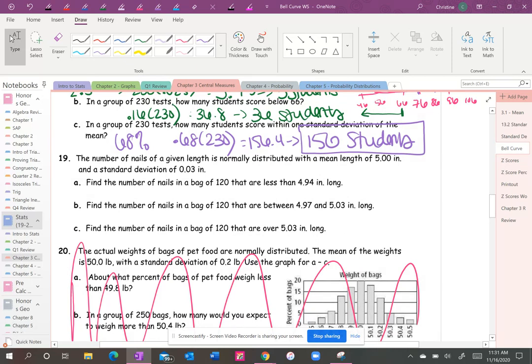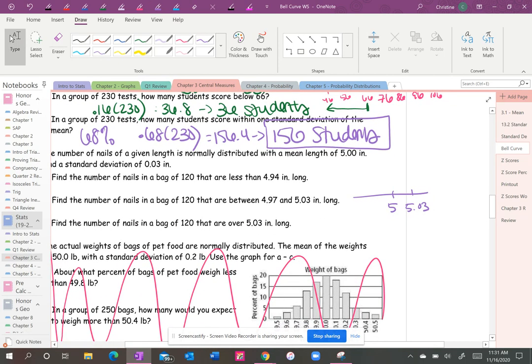Is normally distributed with a mean length of five inches, a standard deviation is 0.03. So 5 plus 0.03 obviously is 5.03, and then if you just keep putting in on your calculator plus 0.03, you'll get that ans button that pops up. This will be 5.06, 5.09.